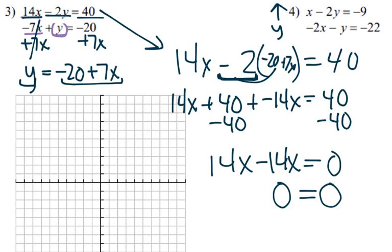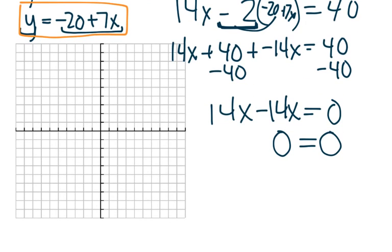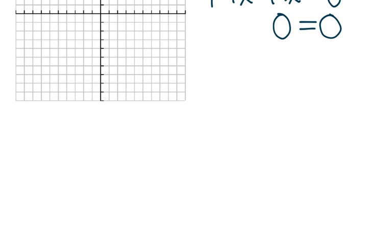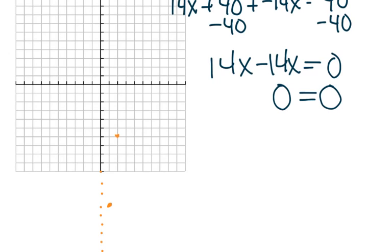Now I don't know what my variable equals. To understand this, we think graphically. The equation y equals negative 20 plus 7x has a y-intercept of negative 20 and a slope of 7 over 1. Starting at negative 20, going up 7 and right 1 repeatedly traces out the line.